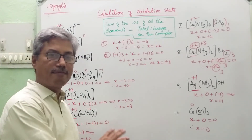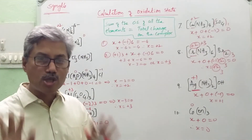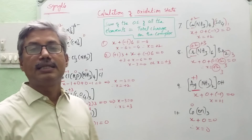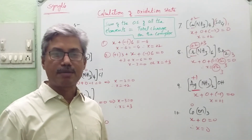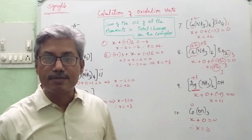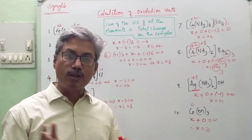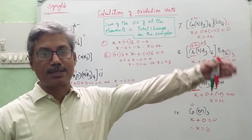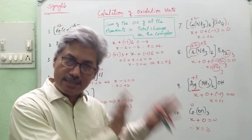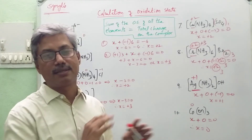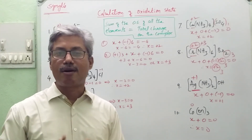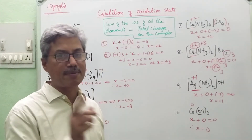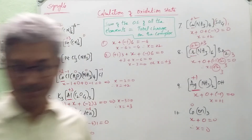Students, whenever you have a doubt, pause the video and look into the calculation. To summarize: the oxidation state can be calculated using the formula that the sum of the oxidation states of all particles present in the given complex compound must be equal to the total charge on it. The total charge may be nonzero or neutral. Using this, you can calculate the oxidation state. Thank you.